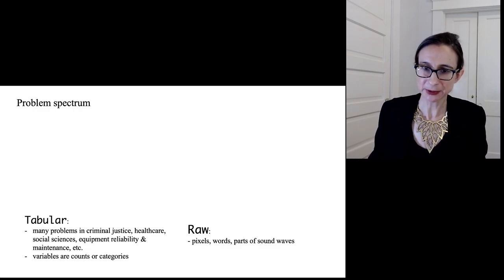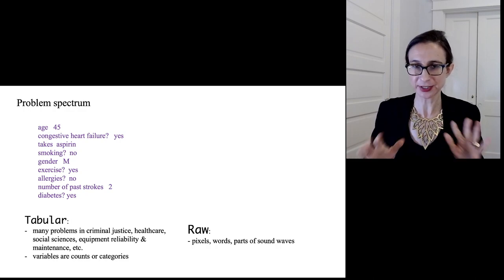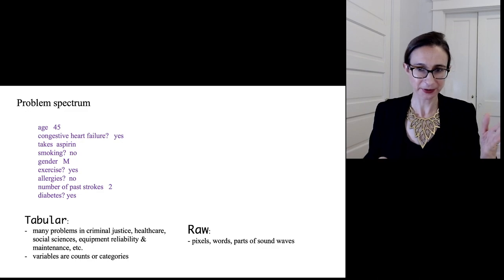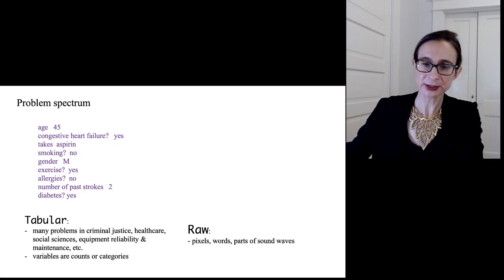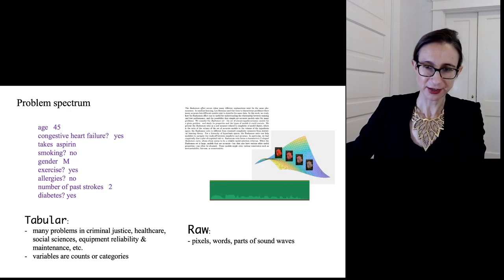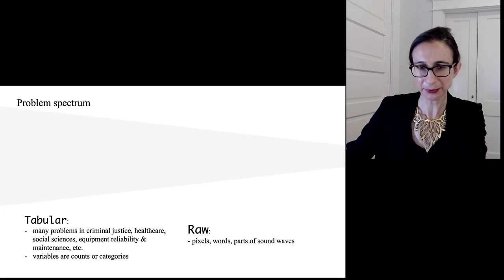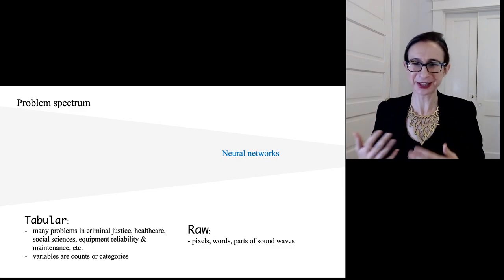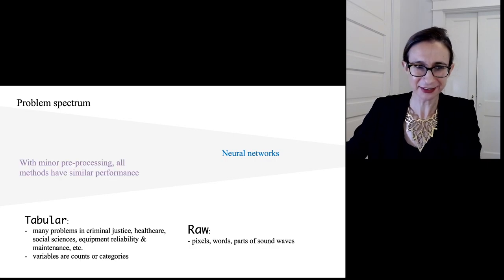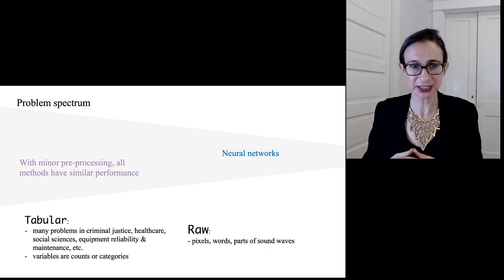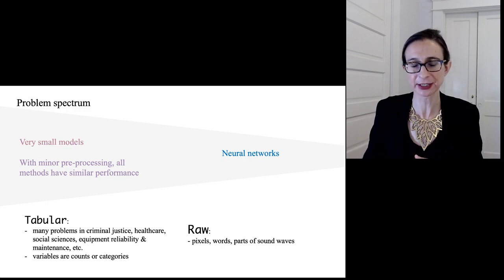There are really two broad kinds of problems in machine learning and data science: problems with tabular data and problems with raw data. Tabular data looks like the criminal justice data I showed — different factors, different questions and answers. Raw data is different — it's images, sound waves, or large amounts of text. For raw data problems, the only technique really working right now is neural networks. But with tabular data, as long as you're willing to do some pre-processing, all machine learning methods generally tend to have very similar performance, including methods that produce very small models like CORALS.